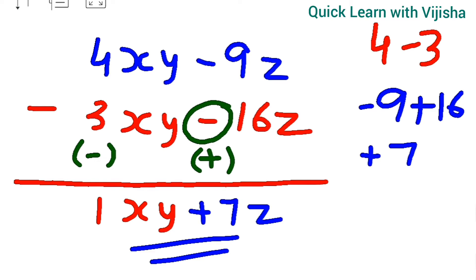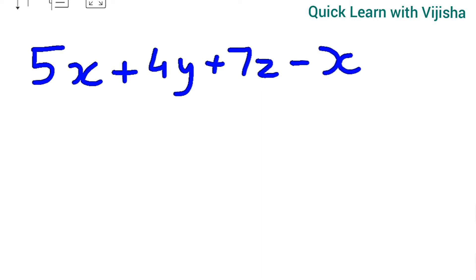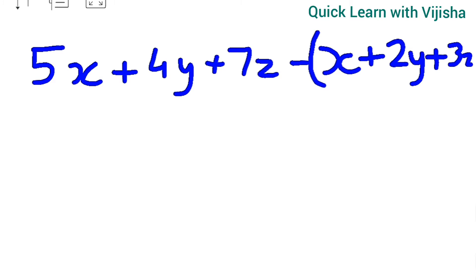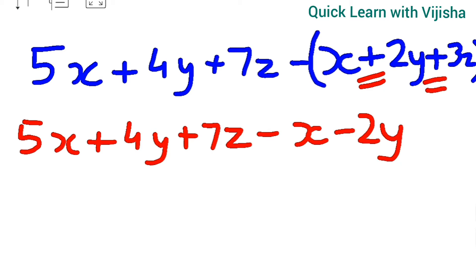Second question: 5x plus 4y plus 7z, subtract x plus 2y plus 3z. We put the second term in brackets with a subtraction sign. Opening the bracket: 5x plus 4y plus 7z, then the signs change — minus x, minus 2y, minus 3z.